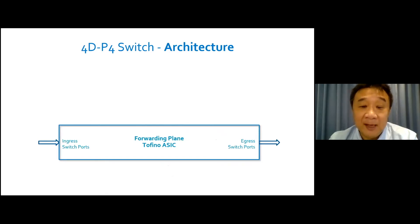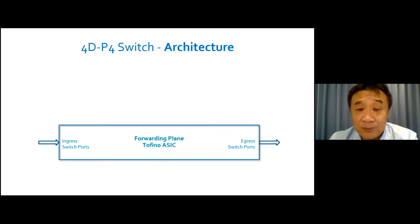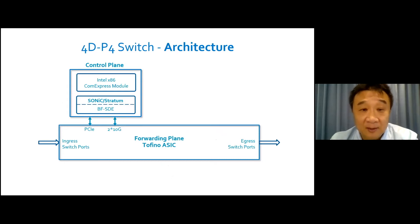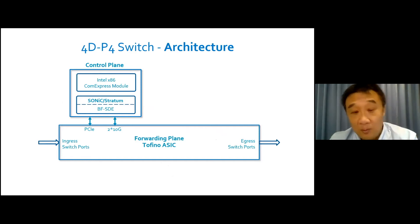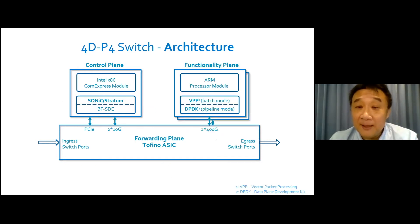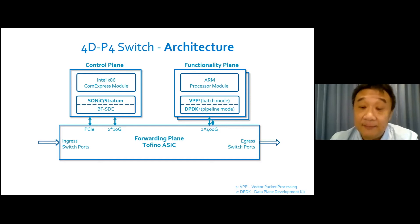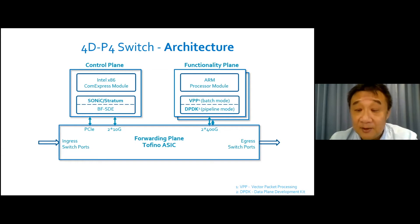The core of the switch architecture is the Tofino ASIC on the forwarding plane. It not only interconnects switching ports together, but also provides interconnection to the other three dimensions of the switch. It connects to the control plane, which includes an Intel x86 ComExpress module running the open source DPDK and MPP software. DPDK and MPP can process packets in batch and pipeline mode, which makes them a superior technology for handling high-performance data plane services.